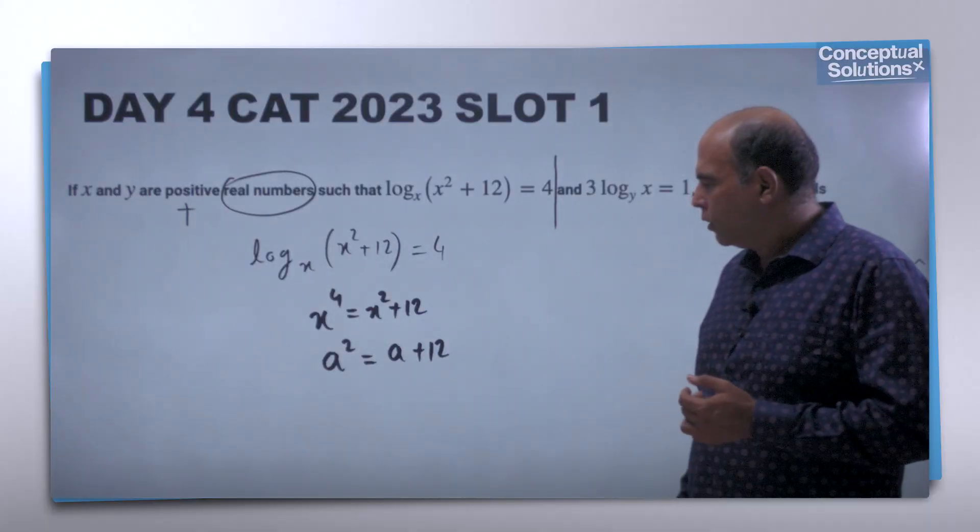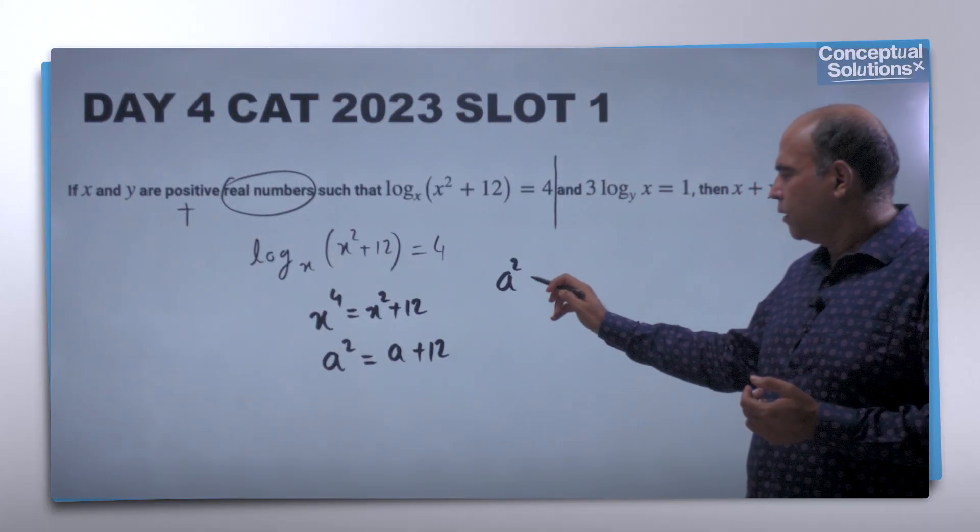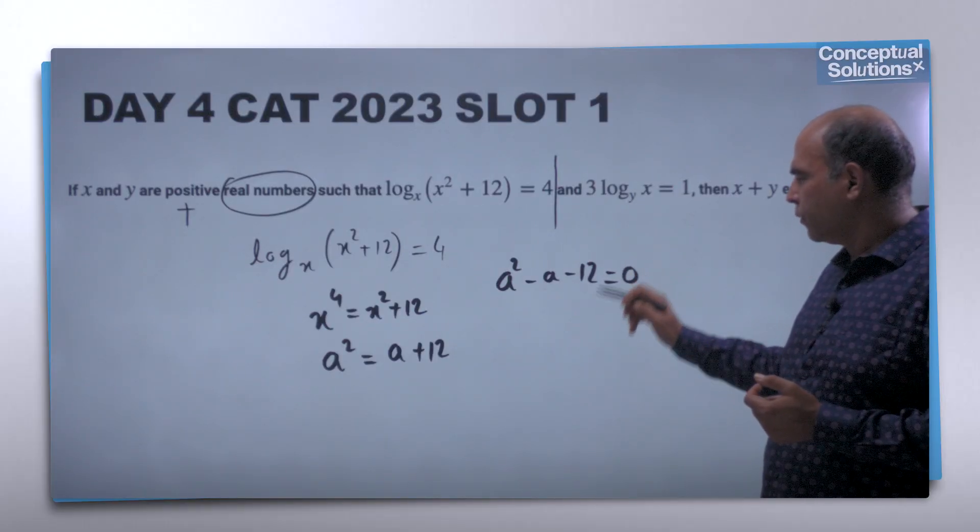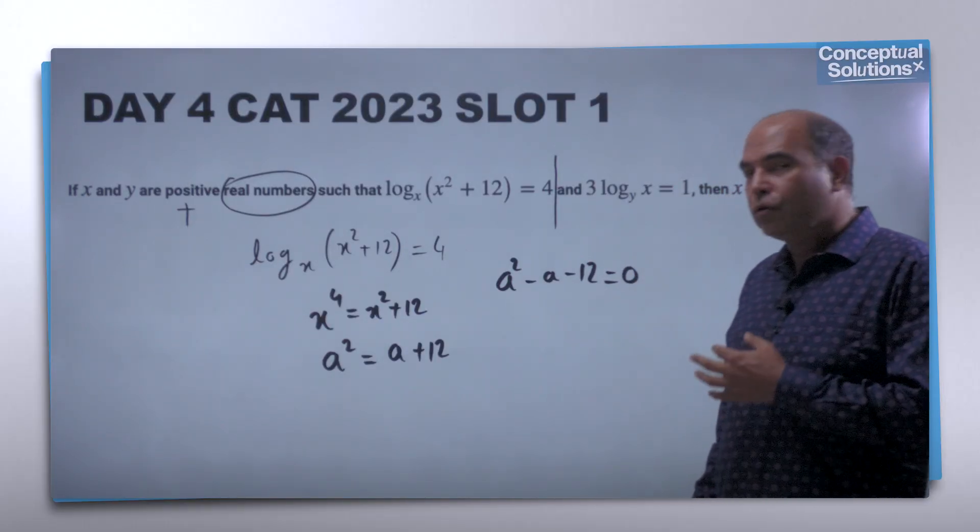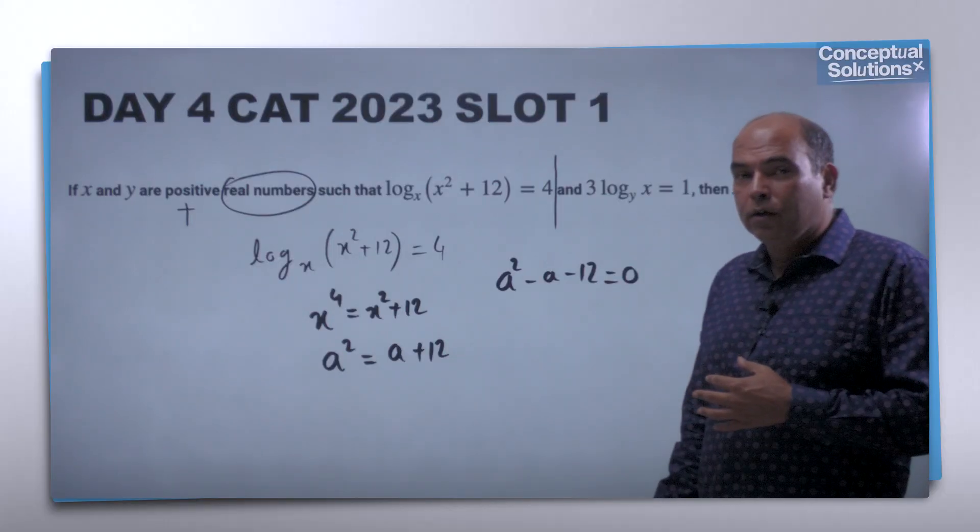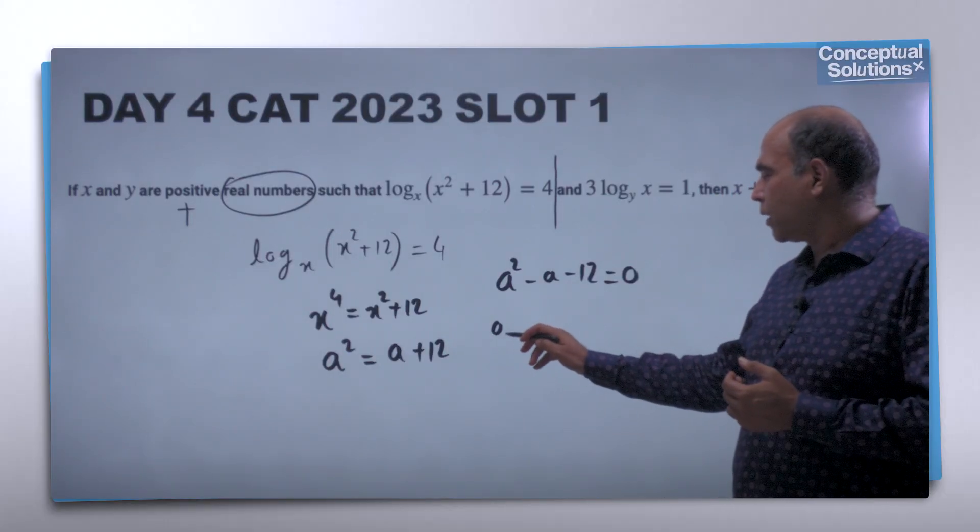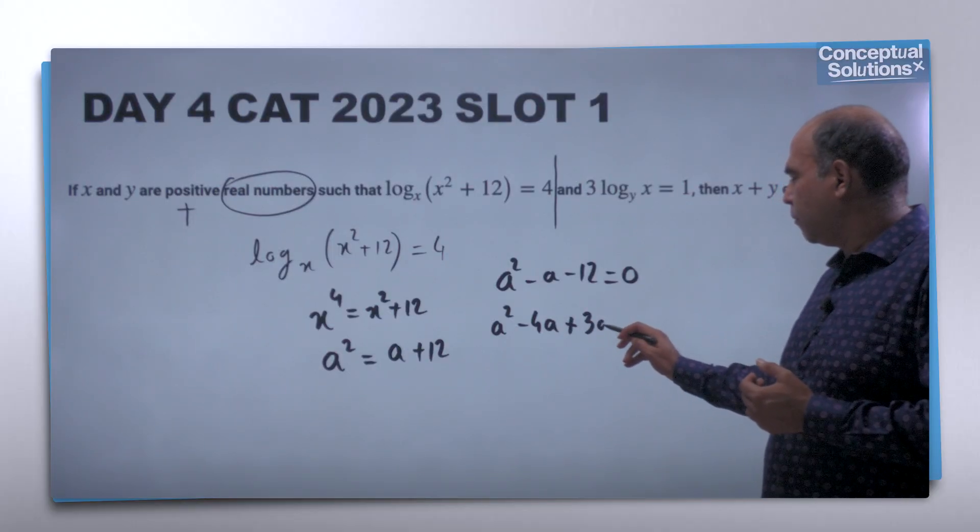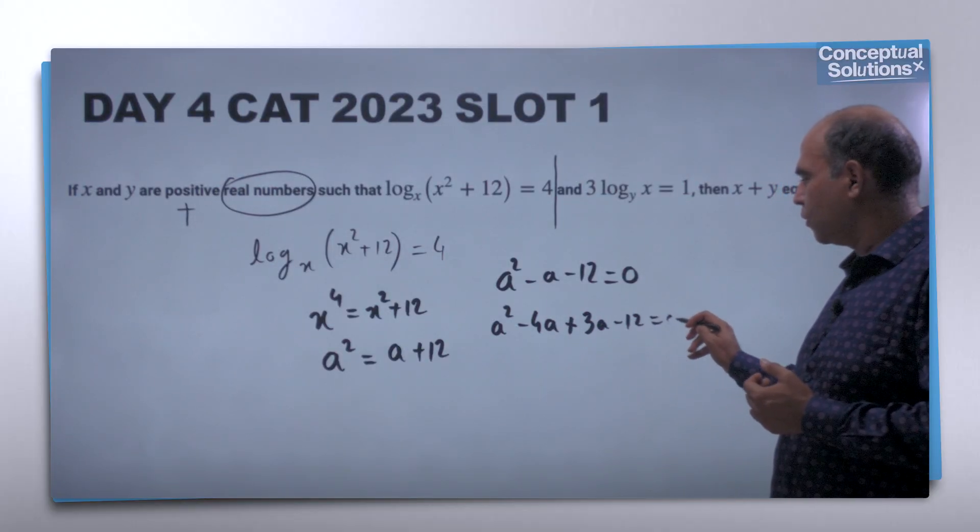When you solve this equation, you can write this as a² - 4a + 3a - 12 = 0.